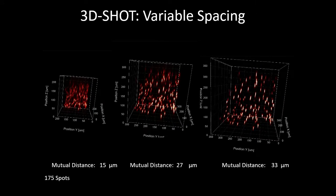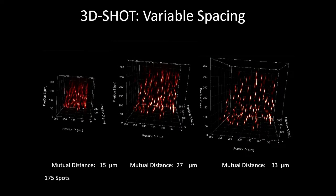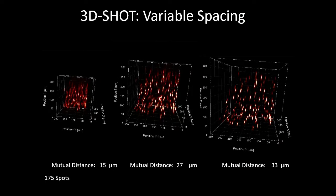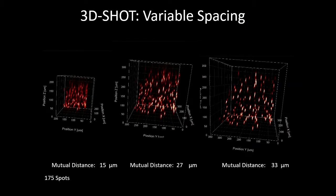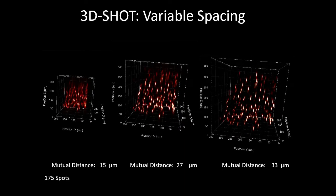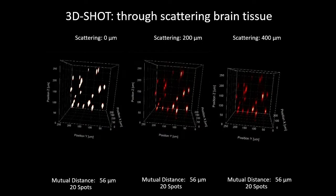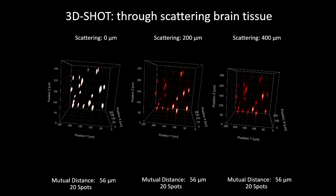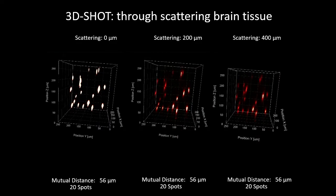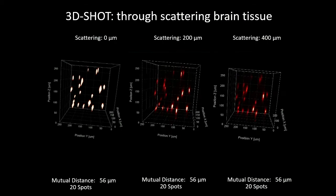We have user-defined control over these patterns. We can take the same number of spots — in this case 175 — and stretch out where they are in space. Each spot is targeted to one neuron in the cortex of a mouse, photo-activating it with extremely tight temporal and spatial precision. To demonstrate this works through scattering tissue, we projected holograms through different thicknesses of real brain tissue and measured on the other side. While you lose some energy to scattering, you preserve the overall resolution of this approach hundreds of microns into the brain.